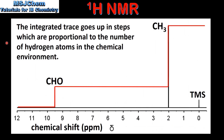Finally we look at an integrated trace. In this spectrum the integrated trace is shown in red. The integrated trace goes up in steps which are proportional to the number of hydrogen atoms in the chemical environment. The CH group has one hydrogen atom and the CH3 group has three hydrogen atoms, therefore this step should be three times higher than this step.